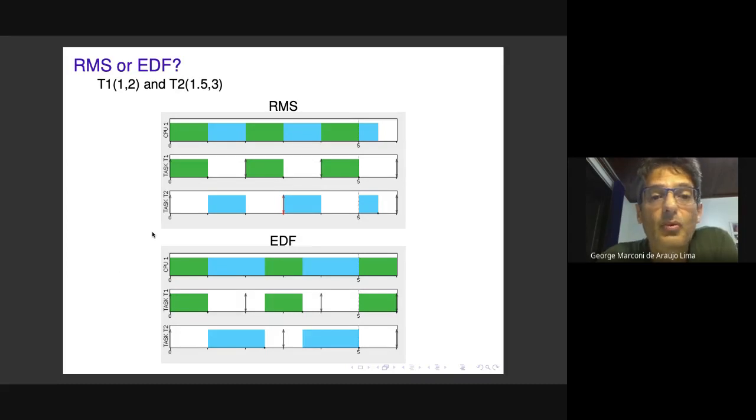This goes to the motivation of this work. Repeating the example with two tasks, but now task two requires 1.5 time units every three time units. The system now requires 100% utilization. Rate monotonic scheduling cannot handle this system. The first instance of task two misses its deadline because there is only one time unit of slack available during the period between zero and three.